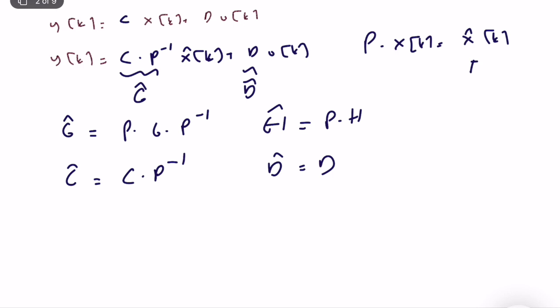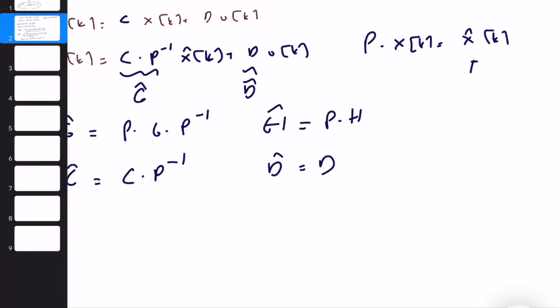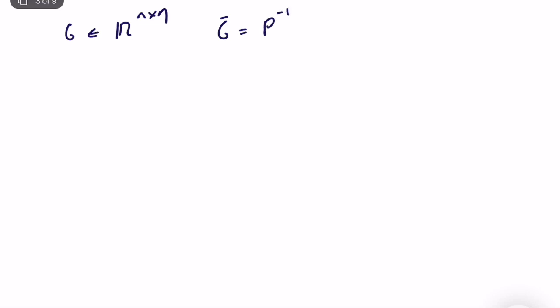Let's solve an example and discuss what changes and what doesn't change when we move from one state definition to another. We have G ∈ ℝⁿˣⁿ and Ĝ = P⁻¹·G·P under a similarity transformation, with det(P) ≠ 0. What we want to show is that G and Ĝ share the same characteristic equation — which is even stronger than having the same eigenvalues.